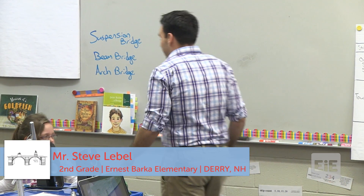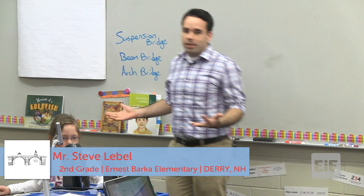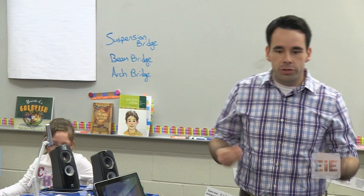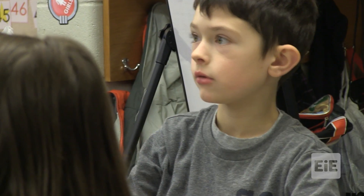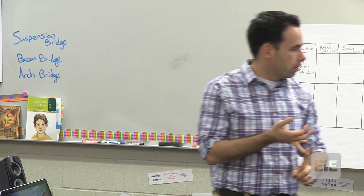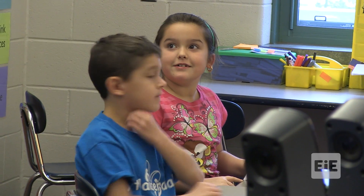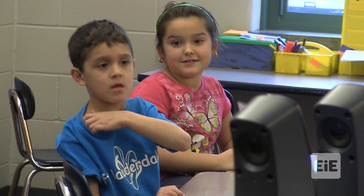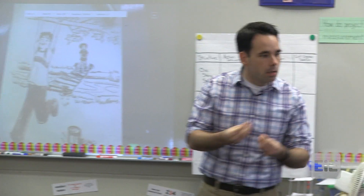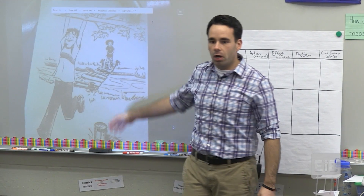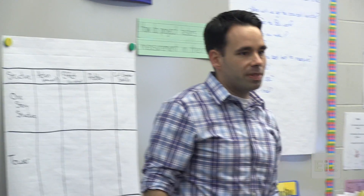Before we begin, here is today's essential question: What does a civil engineer do? They design roads, bridges, and houses. Those are called structures — things that are made. Looking at this picture of Javier and his sister, what is the structure here? What was made?